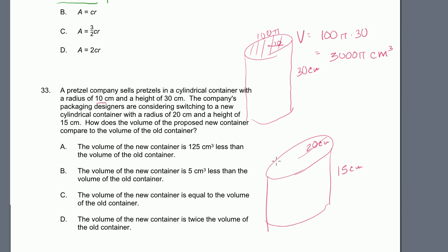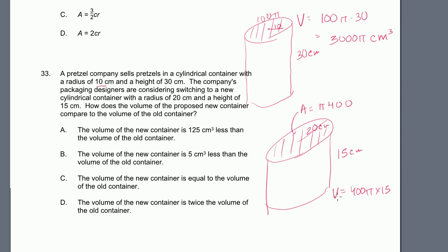The company is considering switching to a new cylindrical container with a radius of 20 centimeters and a height of 15 centimeters. The new container's volume: π × 20² × 15 = π × 400 × 15 = 6,000π cubic centimeters. The new container has twice the volume of the old container. That is choice D.